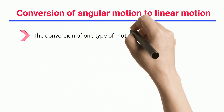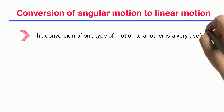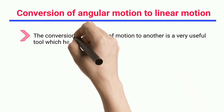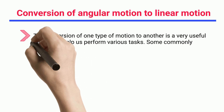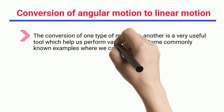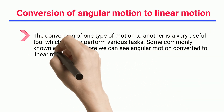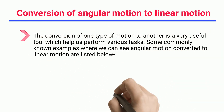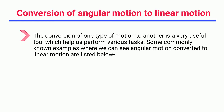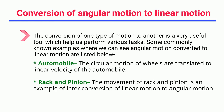Conversion of angular motion to linear motion: the conversion of one type of motion to another is a very useful tool that helps us perform various tasks. Automobile: the circular motion of wheels is translated into the linear velocity of the automobile.